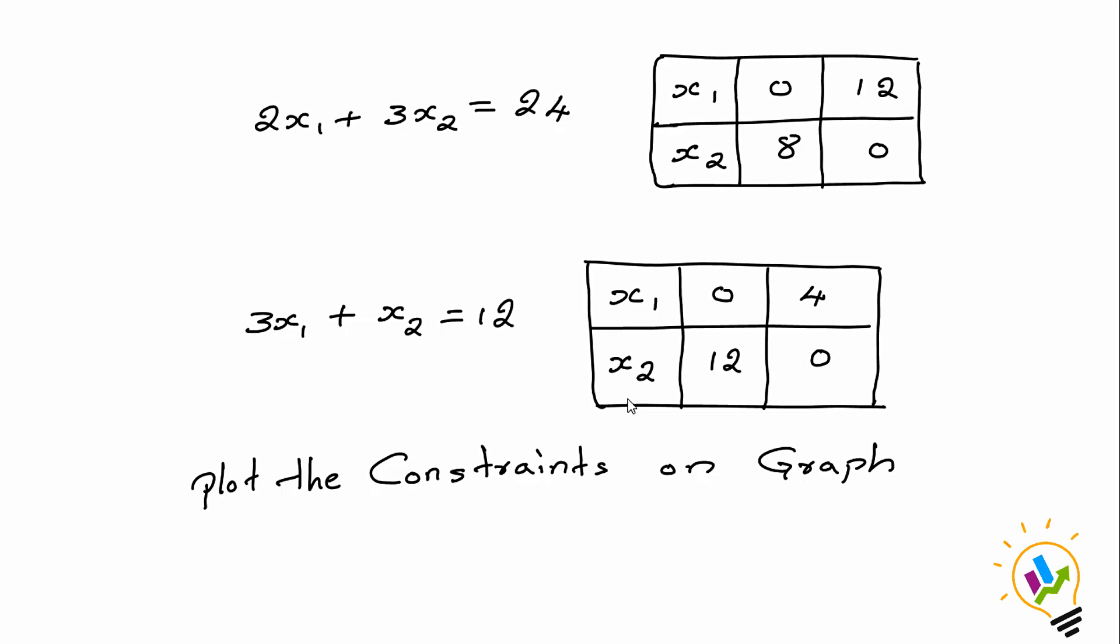When we say a line, it has two points. The first line is 2x1 plus 3x2 equals 24. If x1 equals 0, x2 equals 8. If x2 is 0, x1 is 12.